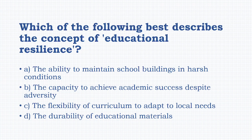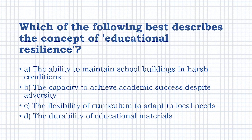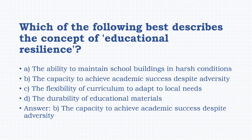Which of the following best describes the concept of 'educational resilience'? Options: the ability to maintain school buildings in harsh conditions, the capacity to achieve academic success despite adversity, the flexibility of curriculum to adapt to local needs, the durability of educational materials. The answer is option B: the capacity to achieve academic success despite adversity.